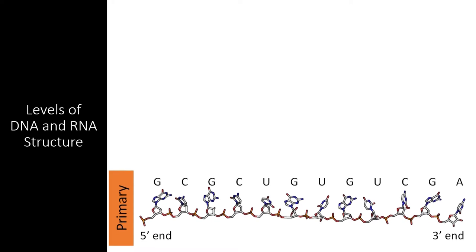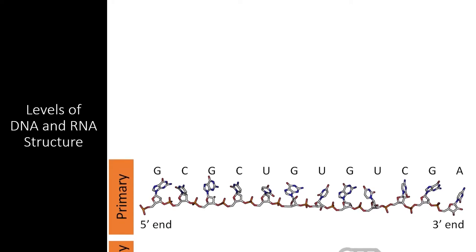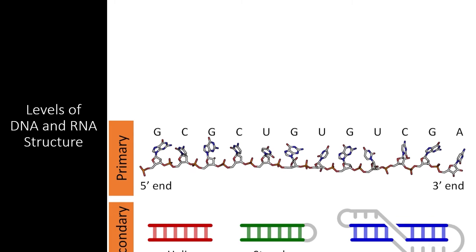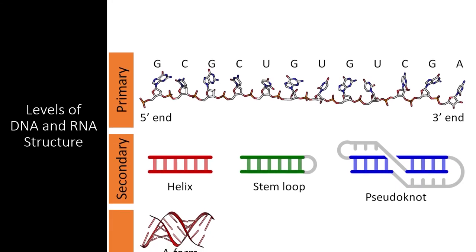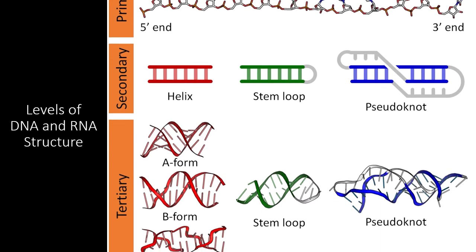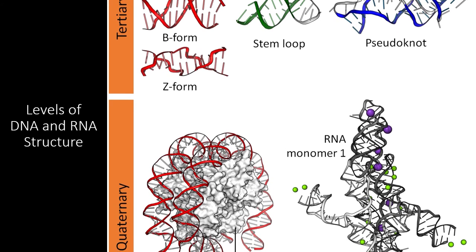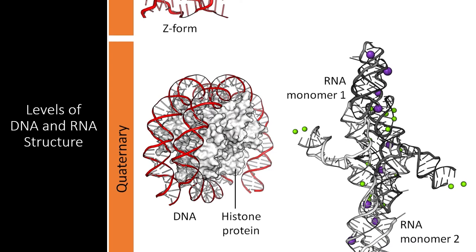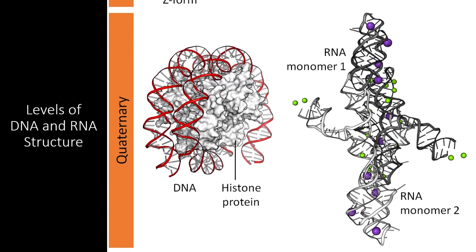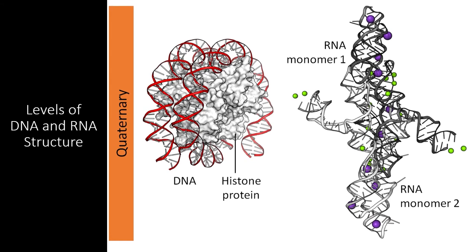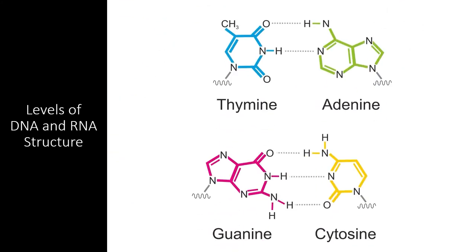Like proteins, DNA and RNA have primary, secondary, tertiary, and even quaternary structure. Primary structure is made from the specific sequence of nucleotides. Secondary structure is formed mostly by base pairing, making a helix between two strands or a stem loop when one strand folds back on itself. Tertiary structure is formed both by base pairing and the unique interactions between different nucleotides and the sugar phosphate backbone. Quaternary structure is formed when DNA or RNA molecules form larger complexes with other nucleic acids or proteins.